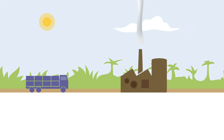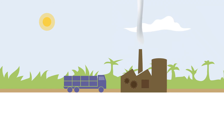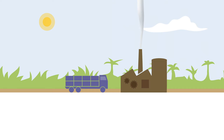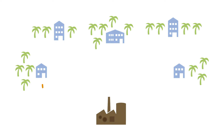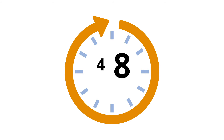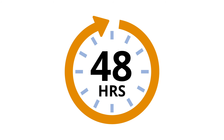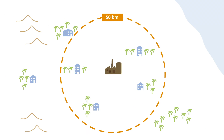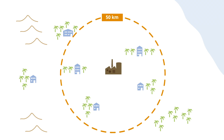After harvesting, the fresh fruit bunches are delivered to an oil palm mill, where the fruit is processed into crude palm oil. An oil mill can receive fresh fruit bunches from several plantations, smallholders, and/or collectors. Since fresh fruit bunches have to be processed within 48 hours after harvest, most of the mill's supply base is located within a radius of about 50 km.